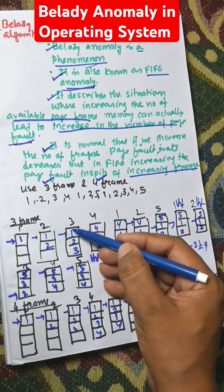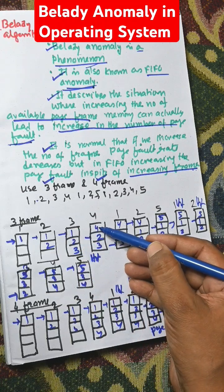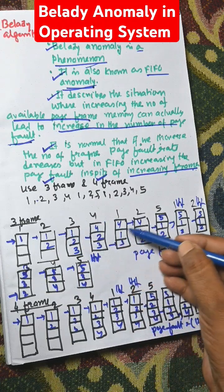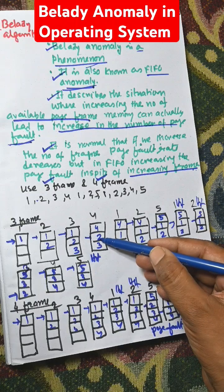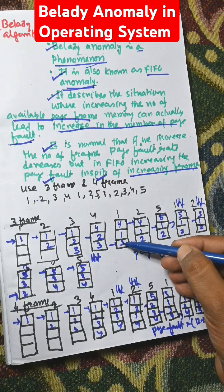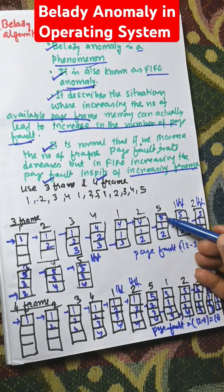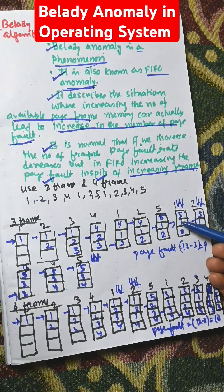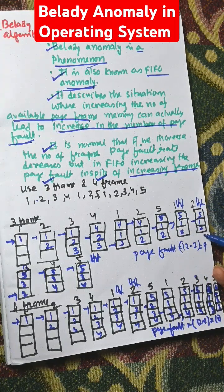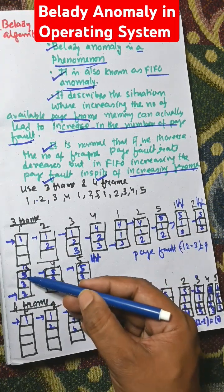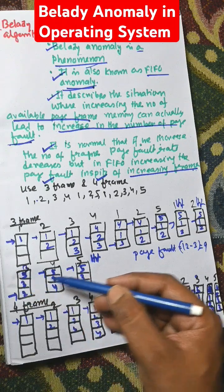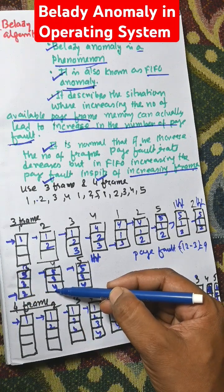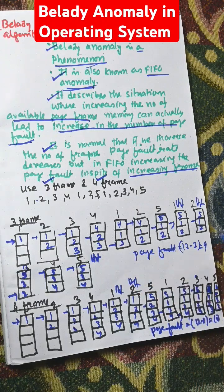With 3 frames: page 1 is loaded, then 2, then 3. Page 4 replaces position 1, then page 1 replaces position 2, then page 3 replaces position 3. Then page 5 is loaded — pages 1 and 2 are available as hits, so 5 replaces 3. Then page 3 replaces position 1, page 4 replaces position 2, and that is a hit.